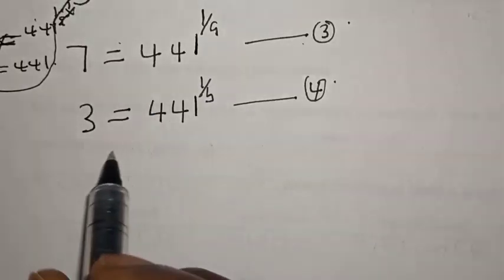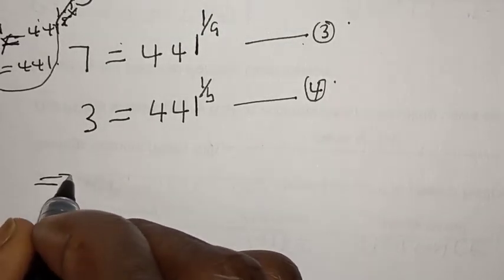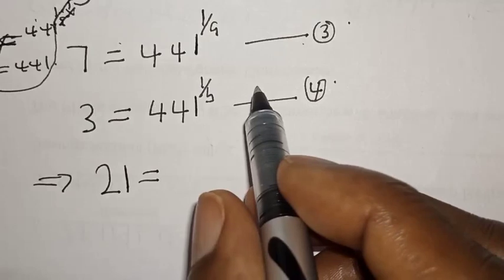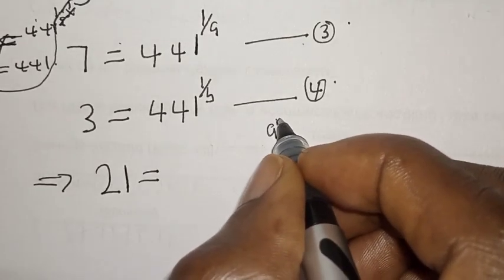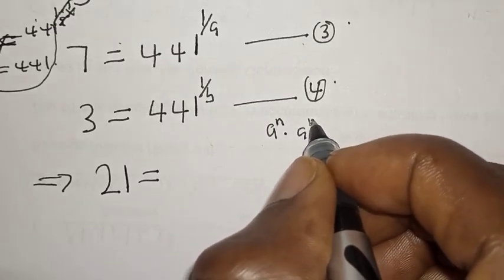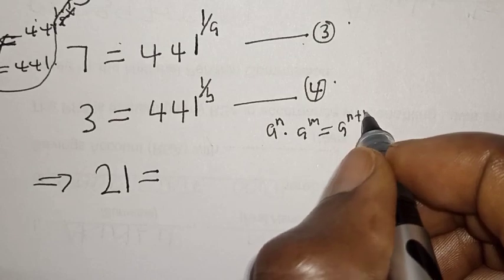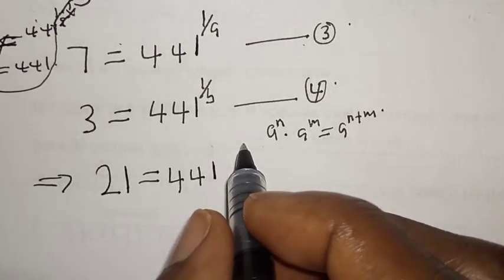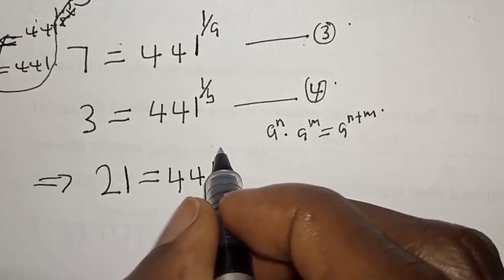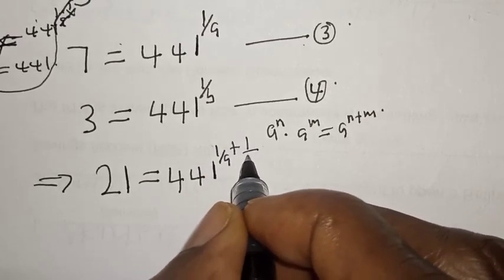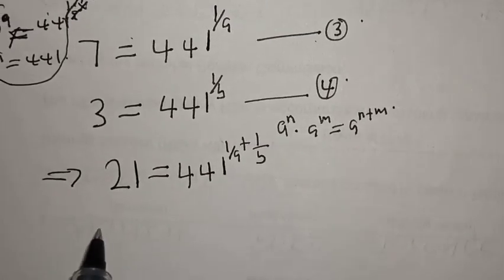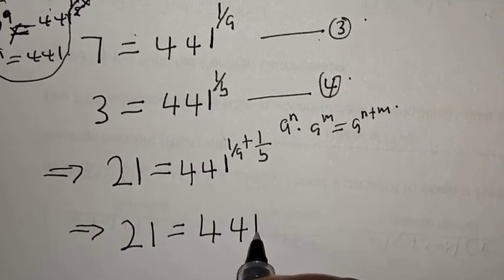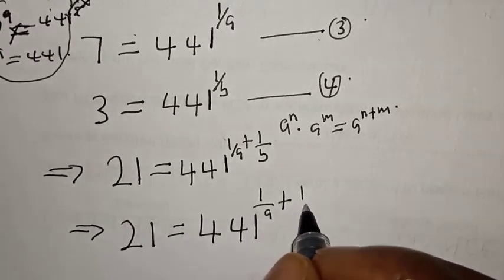Now let's multiply equations three and four. We have 7 times 3, which equals 21, equal to 441 raised to power one over a plus one over b. Remember, if you have a raised to power n times a raised to power m, this can be written as a raised to power n plus m. So we have 21 equals 441 raised to power one over a plus one over b.